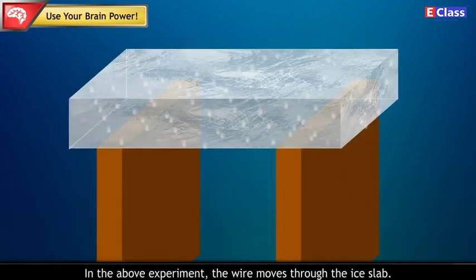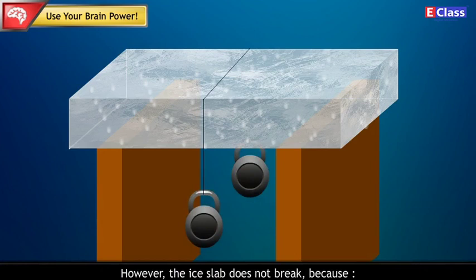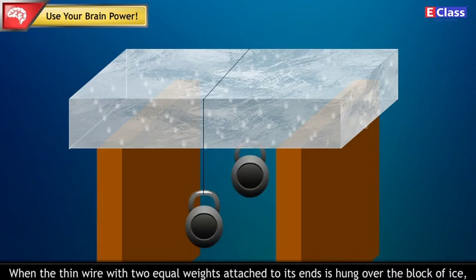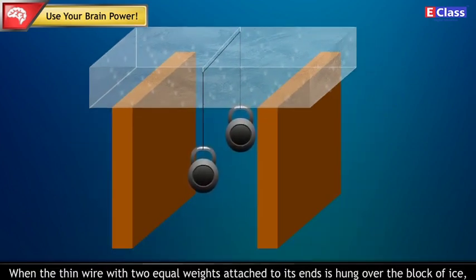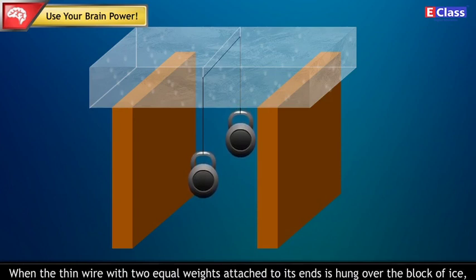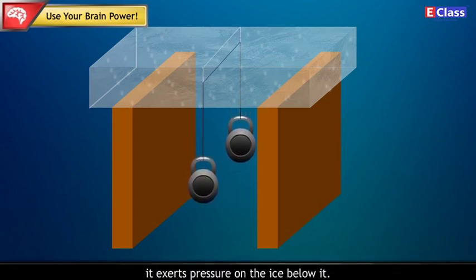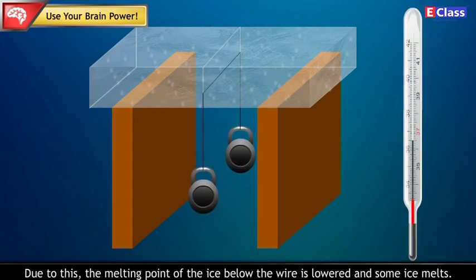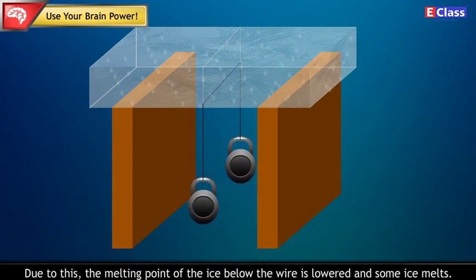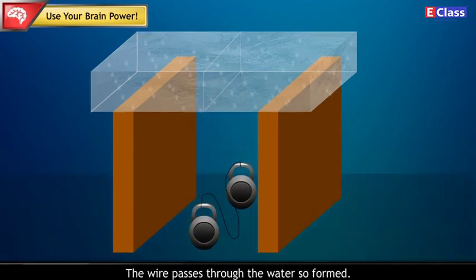Answer: In the above experiment, the wire moves through the ice slab. However, the ice slab does not break because when the thin wire with two equal weights attached to its ends is hung over the block of ice, it exerts pressure on the ice below it. Due to this, the melting point of the ice below the wire is lowered and some ice melts. The wire passes through the water so formed.